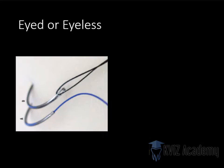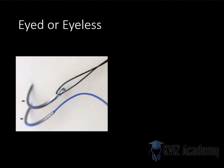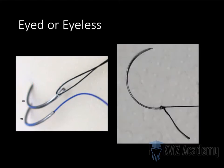Now, this eyed suture needle is called traumatic. The reason — look at the diameter of this needle. The diameter of the eye, the size of the eye, is more than the needle shaft. So when you pass the needle, it will pass through easily, but when you try to pass this eye, it is going to give more resistance because it is wider. Another problem: we have a knot over here, so this is clearly wider than this. So it is more traumatic to the tissue.